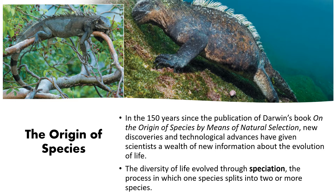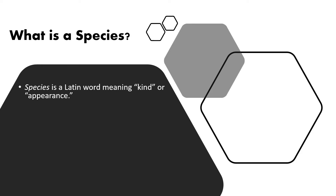A great example is the land-dwelling iguana found on the mainland of Ecuador — they live in trees and spend their whole lives on land. Then we have the marine iguana that evolved on the Galapagos. These are two different species; they are very closely related, what we'd call sister species. But they can no longer come into contact and interbreed, so speciation has taken place.